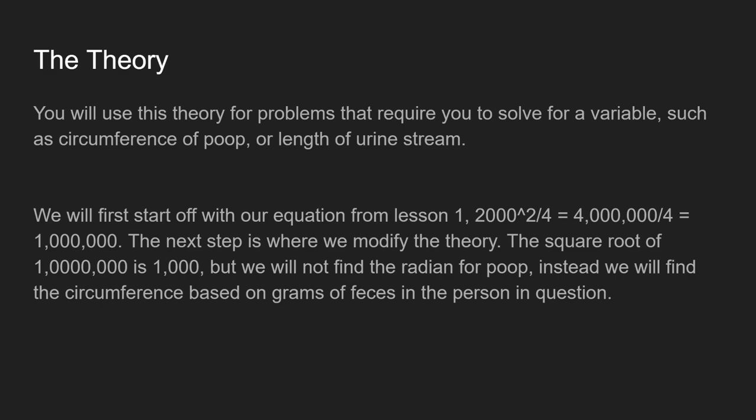Okay. If you know the theory from last class, you know that if you do all the math, it'll equal 1,000. Usually after this step, you find the radian — and that's the radian for poop. But this time we're going to find the circumference based on the grams of feces in the person in question. I'll explain in a bit.